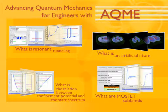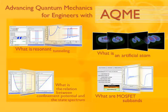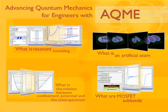Another toolset we call ACME — Advanced Quantum Mechanics for Engineers — allows us to deploy in a single package tools about resonant tunneling, artificial atoms, correlation effects in the state spectrum, and quantized MOSFETs. This toolset is geared towards a course that is an introduction to quantum mechanics for engineers, but oriented towards devices rather than nuclear physics. So that is one way of teaching quantum mechanics geared towards semiconductor devices.